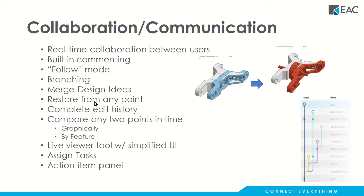Branching allows us to develop a couple of different ideas simultaneously with other people and then pick the best of those ideas. It keeps total history so we can restore from any point in time. We can compare any two points in the history — you can see the same component in two different stages of its life. We can go back to any one of those times and use them as going-forward points if we wanted to.